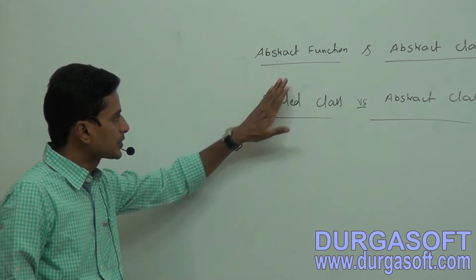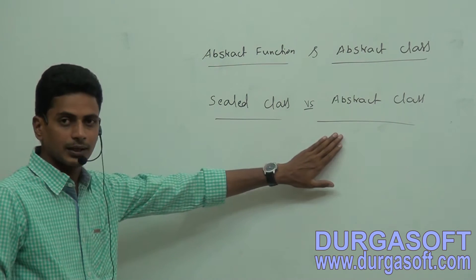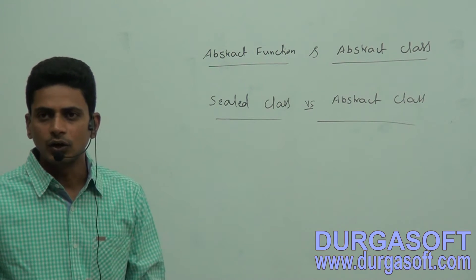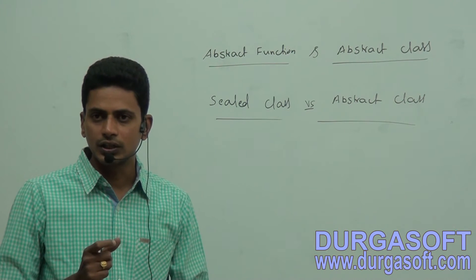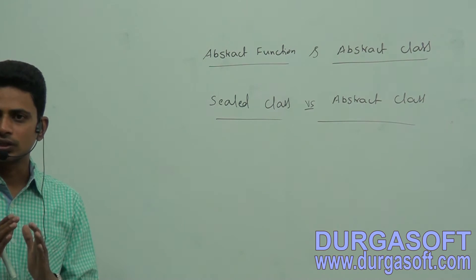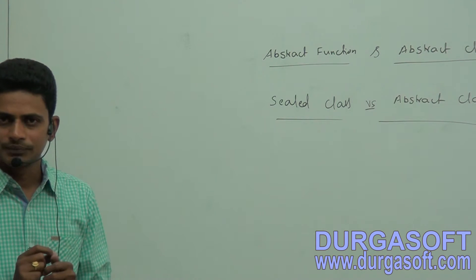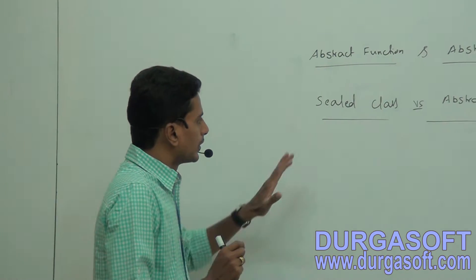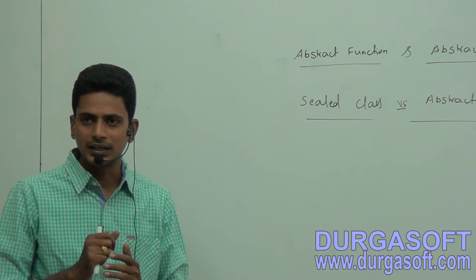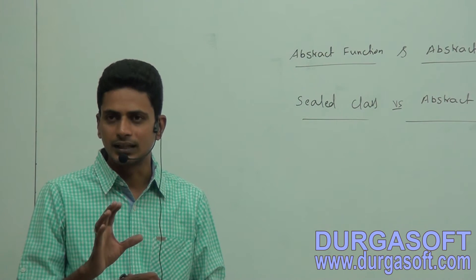I'm going to discuss abstract functions and abstract classes, and also sealed class versus abstract class. An abstract function is a function which contains only declaration or signature and does not contain any implementation or body. Abstract functions must be terminated because they don't contain any implementation.